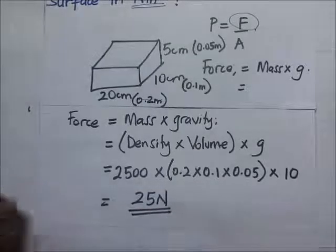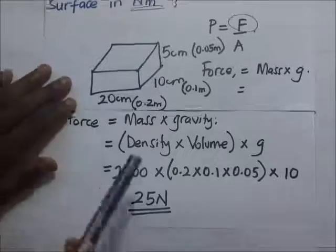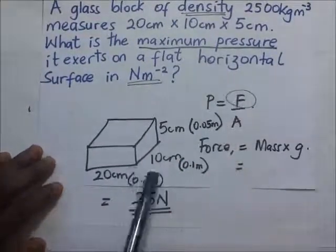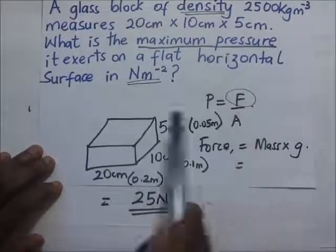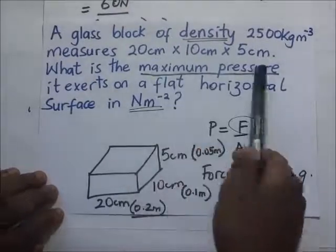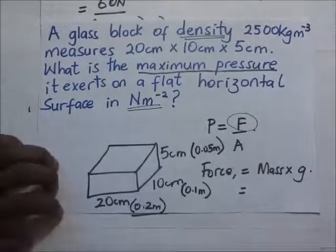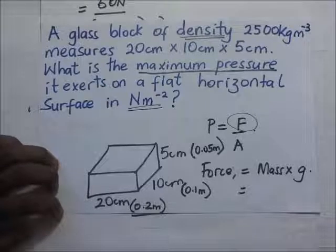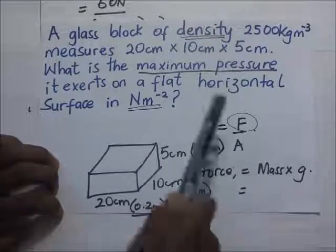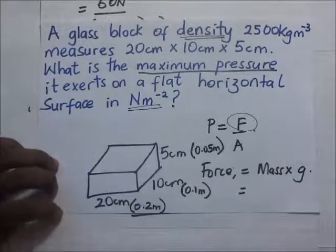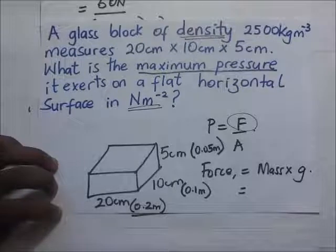The force we have calculated is 25 newtons. After finding the force, we go ahead and find the area. They are asking for the maximum pressure. As discussed previously, in pressure in solids, the smaller the area, the higher the pressure. So maximum pressure is exerted onto the smallest surface area.